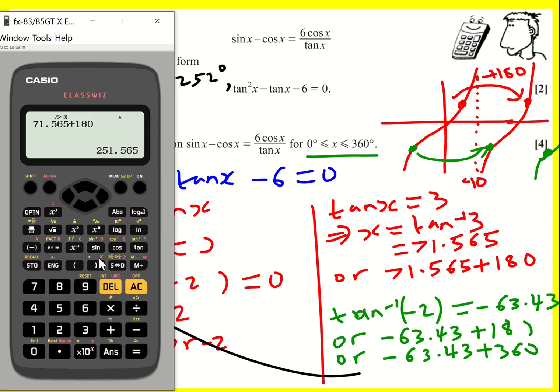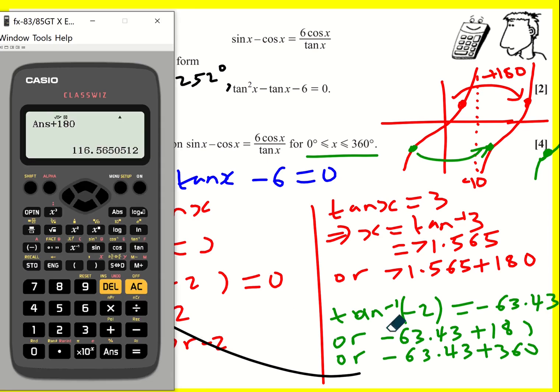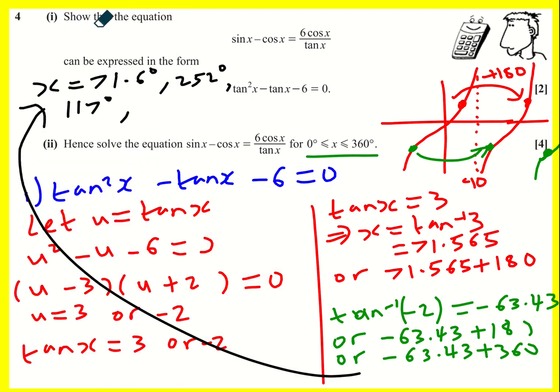I've got my, let's just get inverse tan of minus 2 back. I've got 116, so 117 degrees. Or if I add one more 180 on, that'll give me this final one. Then I've got 297 degrees.